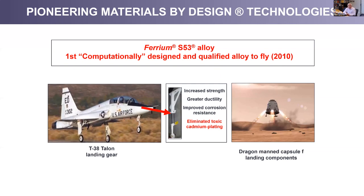Materials by design is one of our trademarks — it simply means designing materials microstructure and altering it at the atom level. Ron hinted that Quest Tech is considered a pioneering ICME company. The first alloy, the ultra-high-strength steel Ferrium S53, is the first alloy to be computationally designed from a clean sheet of paper and qualified to fly, flying in 2010 on the T-38 Air Force trainer as a landing gear.